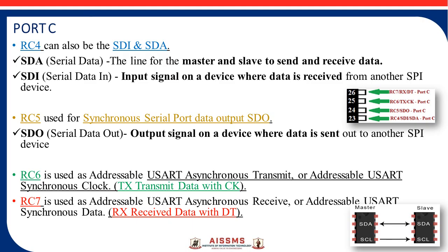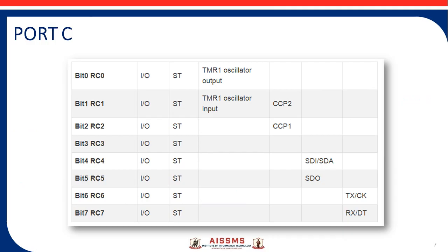RC6 has the feature of transmit data (TX), and RC7 provides receive data (RX). Pin numbers 25 and 26 are used to address the USART serial communication protocol — Universal Synchronous Asynchronous Receiver and Transmitter. When serial communication transfers data bit by bit, TX is high for transmission and RX is high for receiving data. These pins provide the USART features, which were discussed in detail in the previous video.